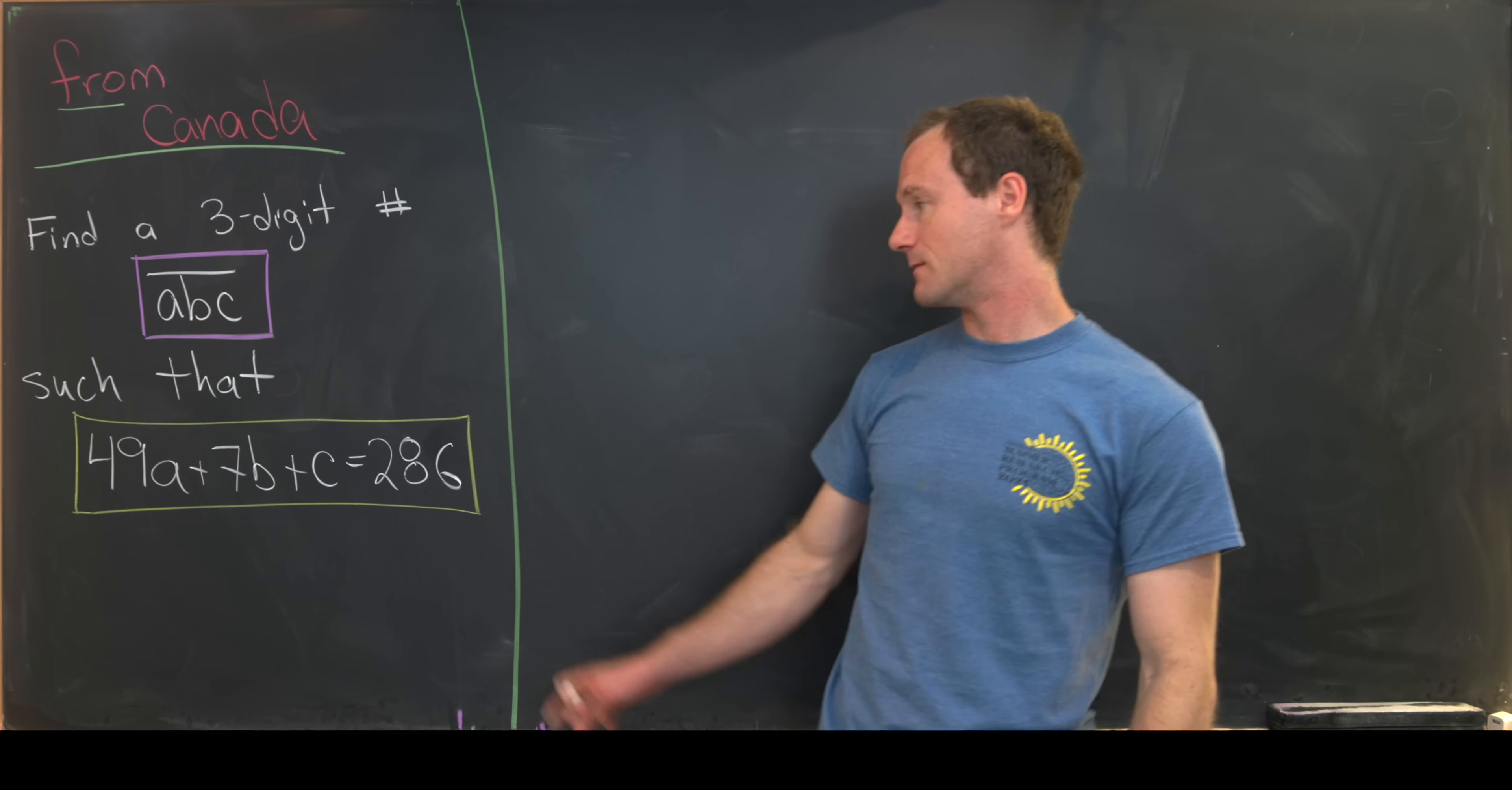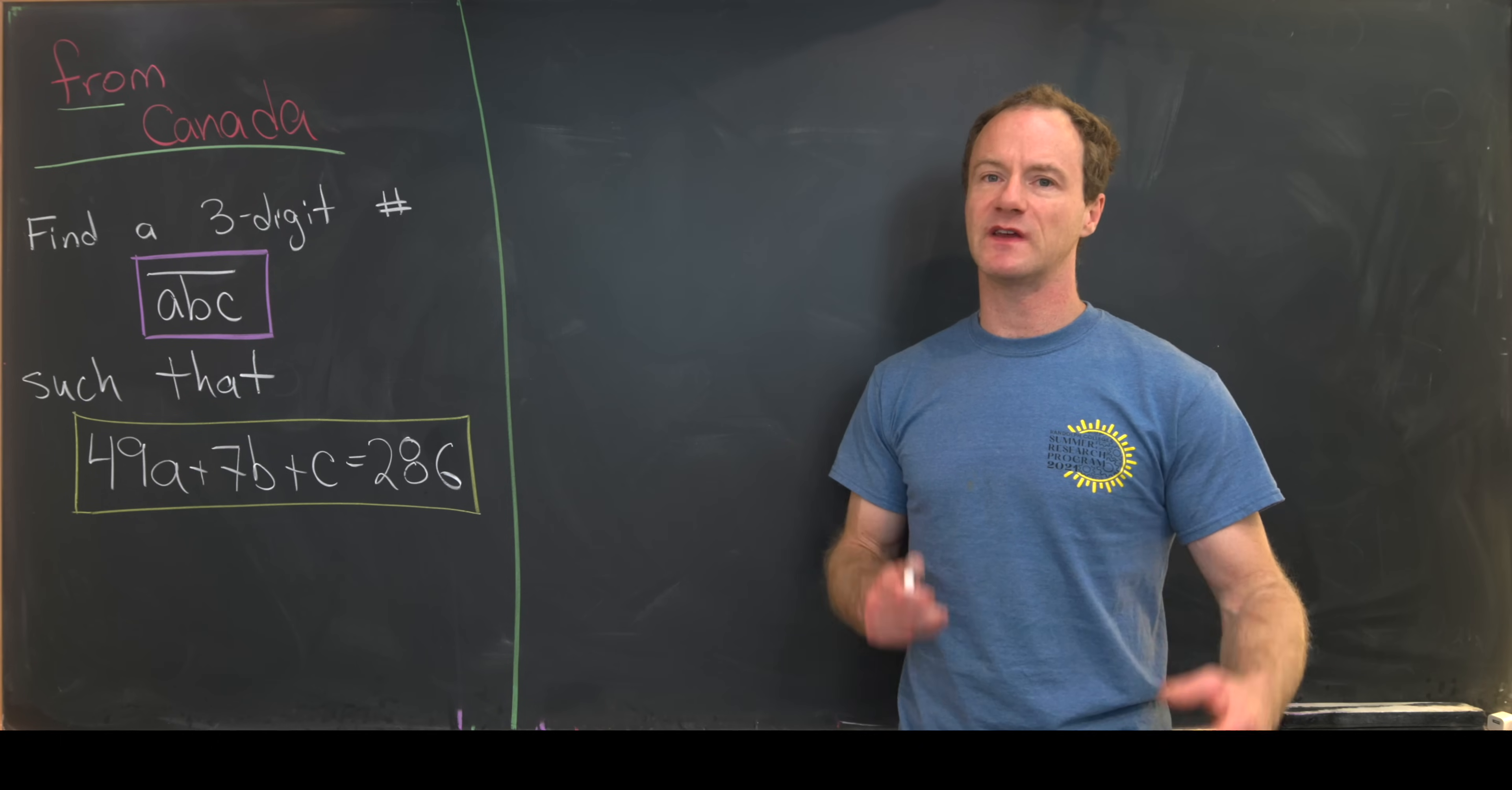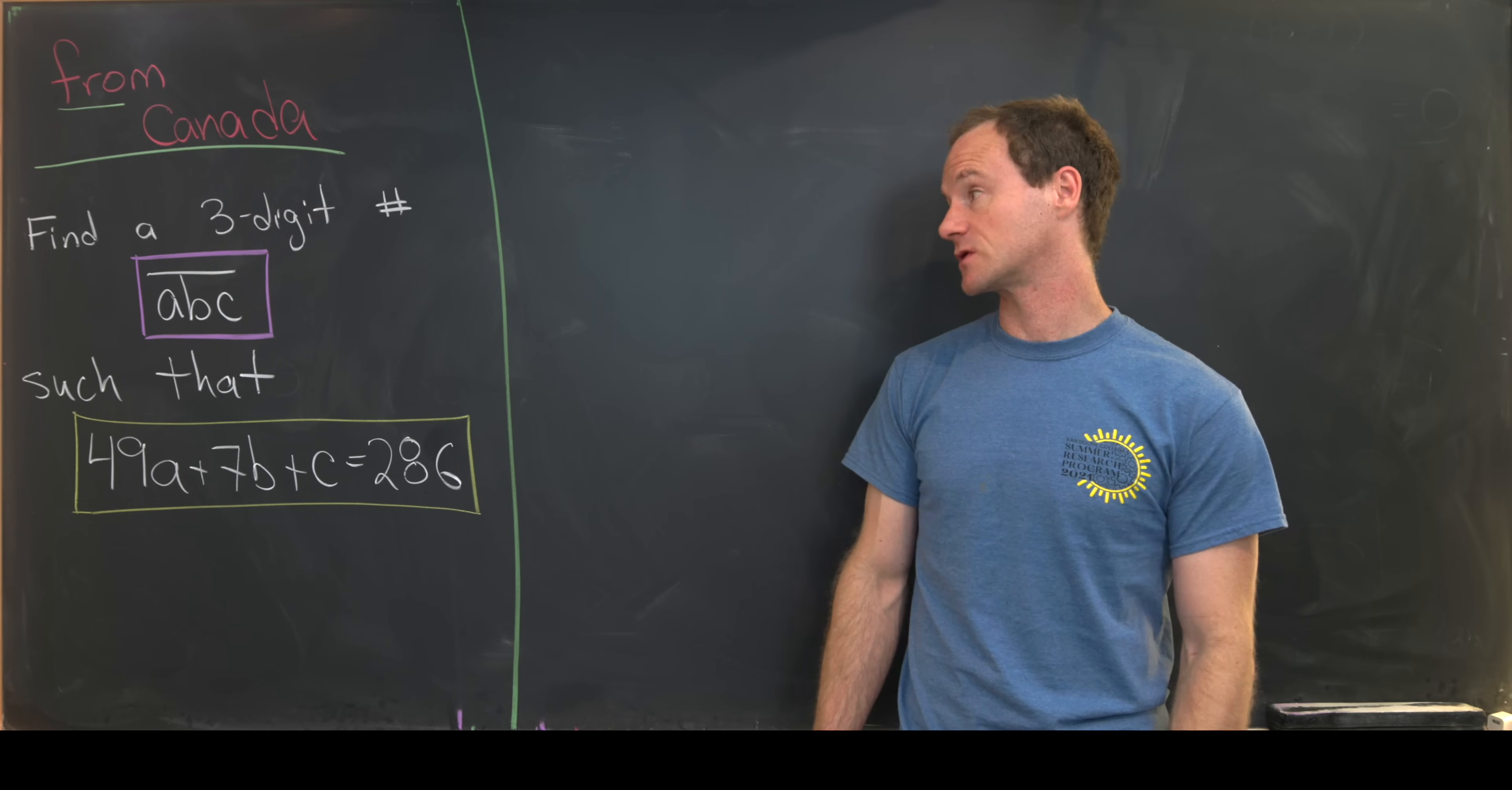So our three-digit number must satisfy the following equation: 49A plus 7B plus C equals 286. And I want to mention that I think there's a really quick solution to this that comes from viewing this in base 10 and base 7, given the fact that 49 is 7 squared and 1 is 7 to the 0. But we're going to do a bit of a more straightforward algebraic manipulation just because that's the way that came to me first.